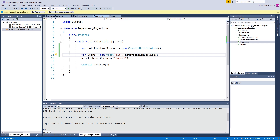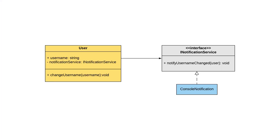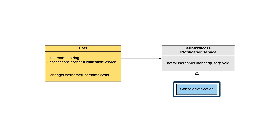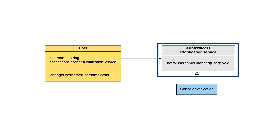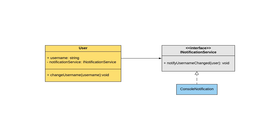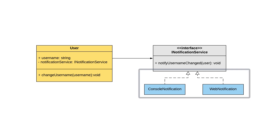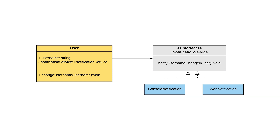Let's recap what we just did. Looking at our classes in a class diagram, now both of our concrete classes depend on an abstraction. The User class and the ConsoleNotification class both depend on the INotificationService interface. Let's say we want to notify the system not only by writing the changed username to the console, but also call a web service to notify other applications. We can easily create a new implementation of the INotificationService interface, and the only code file we need to change is our program class. Everywhere in our application where we use the notification service, the implementation defined in the program class will be used.